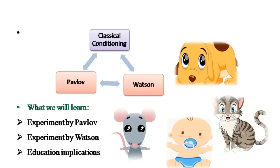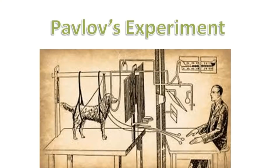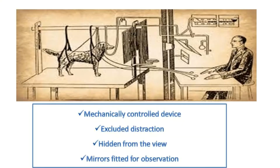Pavlov conducted many experiments. In one of them, he tied a hungry dog onto an experimental table overnight. This table was fitted with certain mechanically controlled devices. Care was taken to make the dog comfortable so there would be no distraction. Distractions were excluded as far as possible. To observe the experiment, the observer kept himself hidden from the dog's view so the dog would not be able to see him.